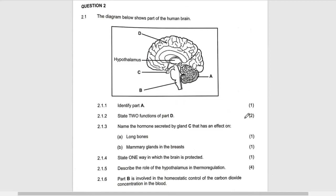Number two, it coordinates all voluntary actions — for example, raising the hand, sitting, standing — things you do on your own will. And then lastly, it receives and interprets all the sensations, for example seeing, hearing, tasting, and all that.